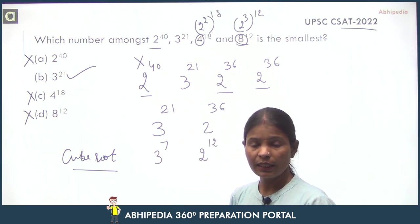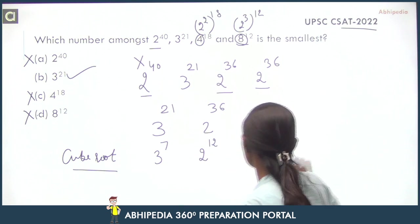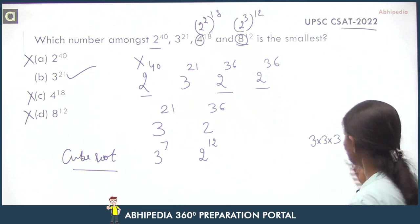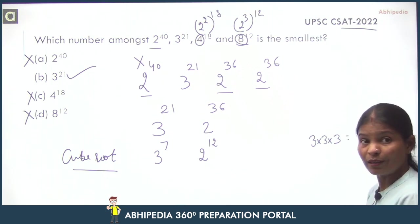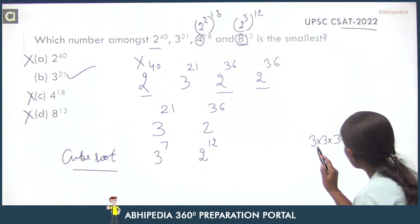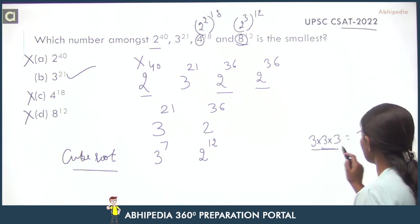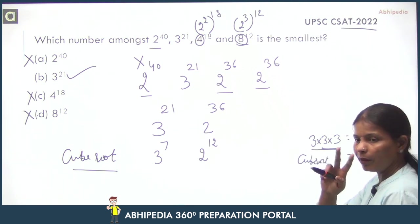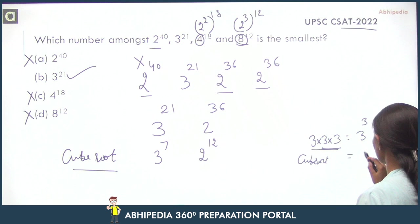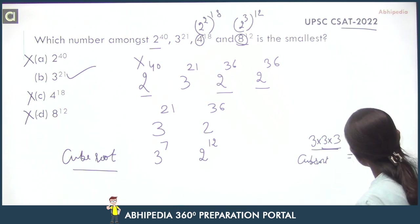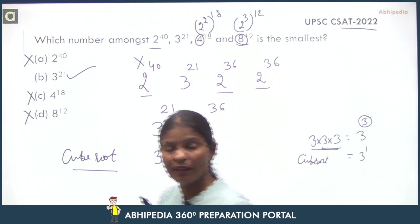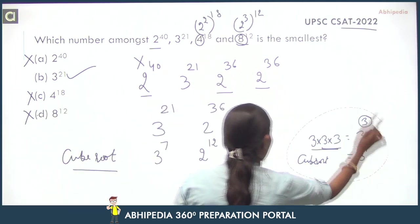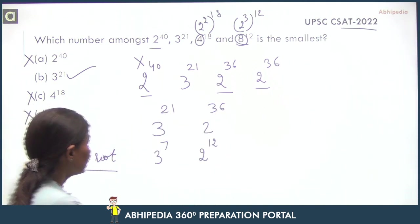Now it is easy. 3 raised to power 7: 3 into 3 into 3. How much? 3 raised to power 3, 3 raised to power 3. Now you have to see these two 3s. If we take cube root, you know that cube root is 3. So this is 3 raised to power 1.